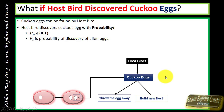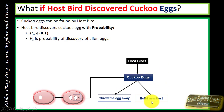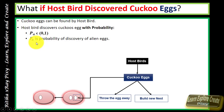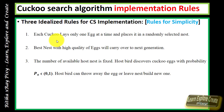Because the cuckoo lays its egg in the nest of another species, there is a probability of discovery of the cuckoo's egg. Once discovered by the host bird, it can either throw the egg away or build a new nest. There is only a 10% probability of discovery of the cuckoo's egg by the host bird. We represent this situation using a probability value — the probability of discovery of the cuckoo's egg.